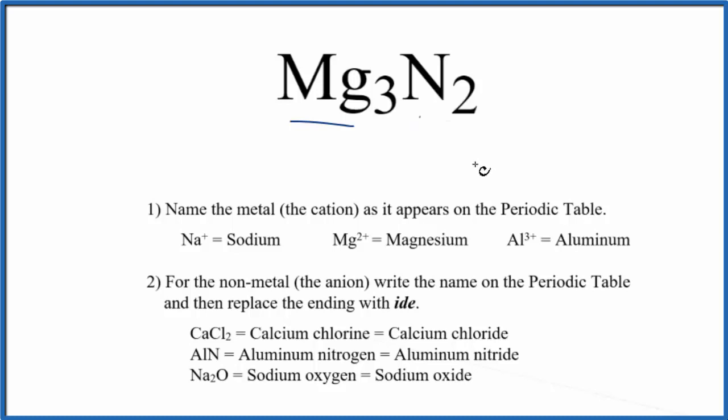Metal and a non-metal, that's an ionic compound. And specifically, this is called a binary ionic compound. That's because we have two different elements bonded together.